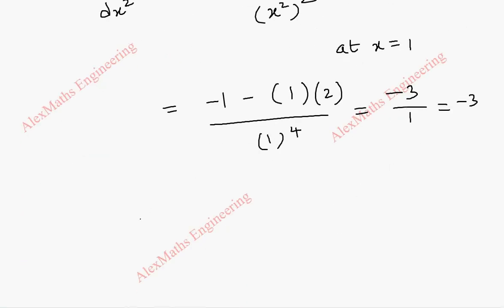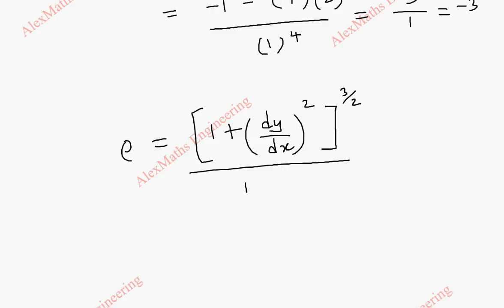So coming to the radius of curvature formula, rho equal to 1 plus dy by dx whole square, whole power 3 by 2, whole divided by d square y by dx square. If this is negative, we take its magnitude as positive.